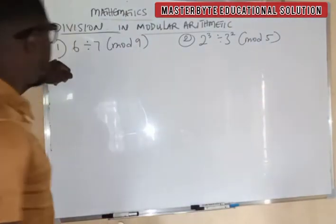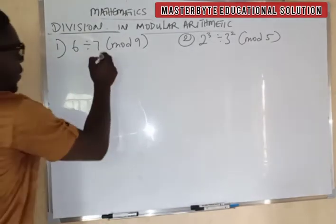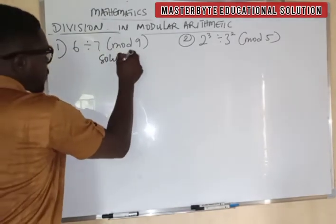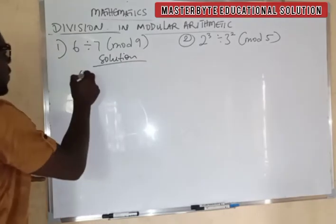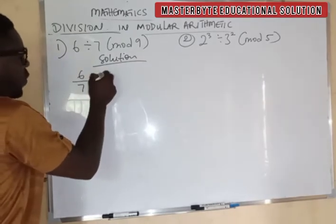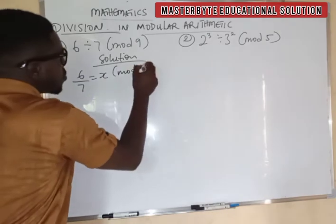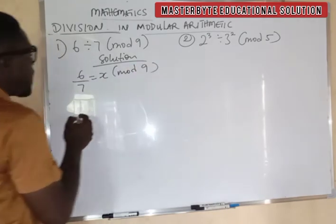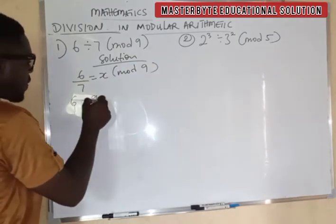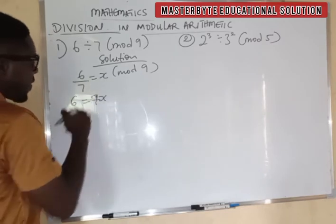Now we are in example one. We are given 6 divided by 7, mod 9. Now, let's watch how we go about it. The first thing: you have 6 divided by 7 equal to x, mod 9. Now, if you cross-multiply, you're going to have 6 equal to 7x.